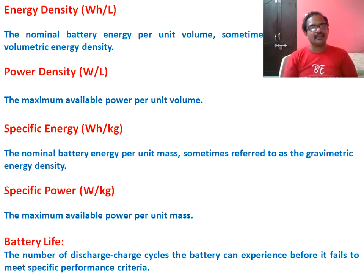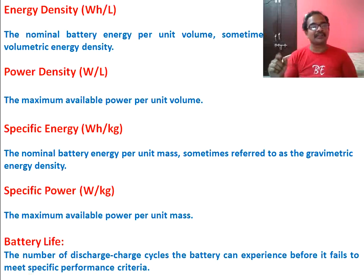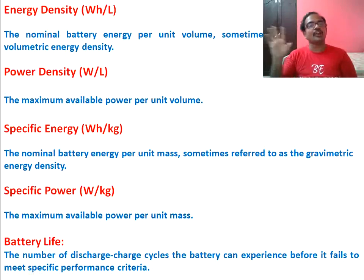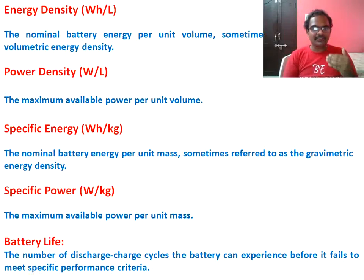The next parameter is energy density — the battery energy per unit litre of electrolyte, also called volumetric energy density, with units of watt-hour per litre. Power density means watt per litre — the maximum available power per unit volume. Specific energy, also called gravimetric energy density, is the nominal battery energy per unit mass. Specific power means the maximum available power per unit mass.